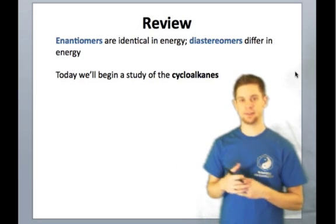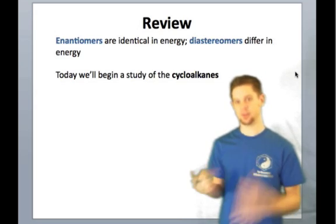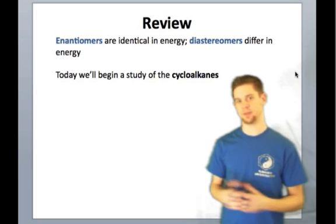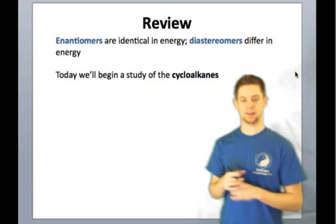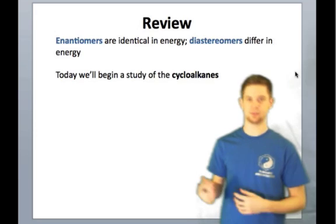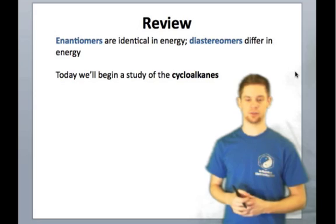Diastereomers react in different ways with all kinds of molecules. They actually have different internal distances, so they behave differently chemically. We can take advantage of that difference to separate enantiomers. If we convert two enantiomers into diastereomers of each other, we can then separate them using conventional techniques.